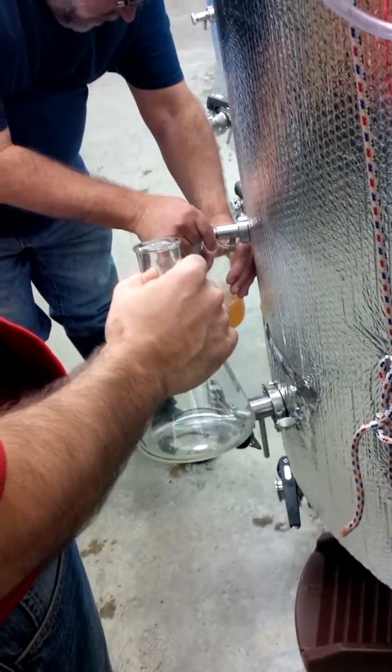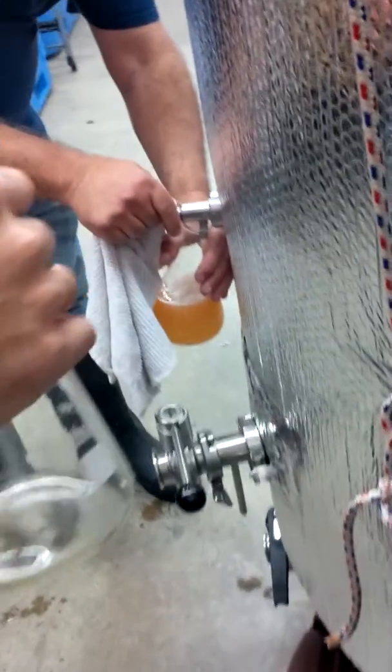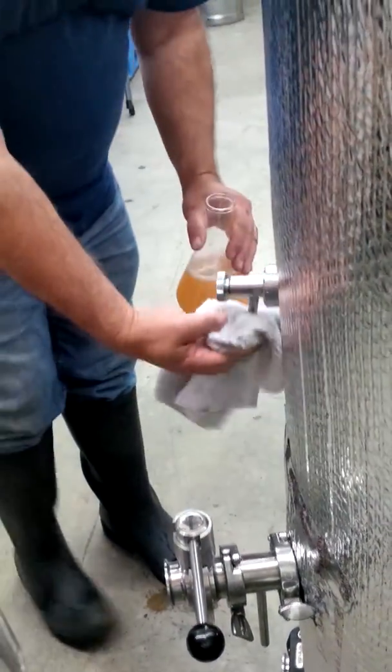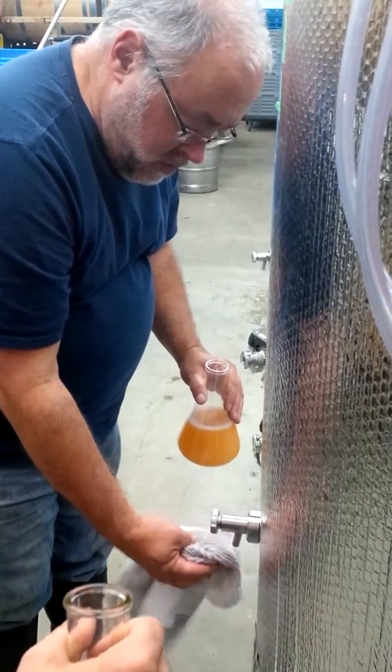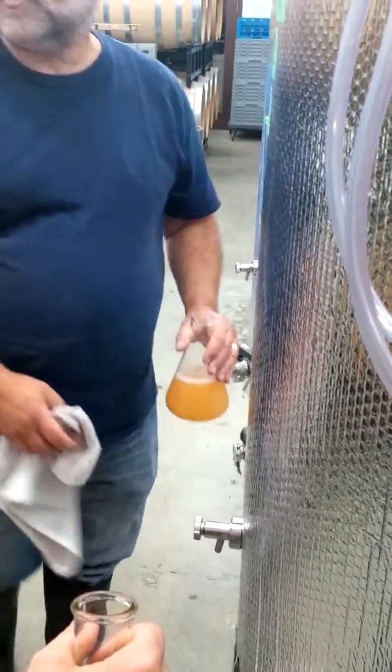Those are the crushed grapes coming in for the punchdown. This has been in the tank since August 29th, or thereabouts. It was picked on August 29th.